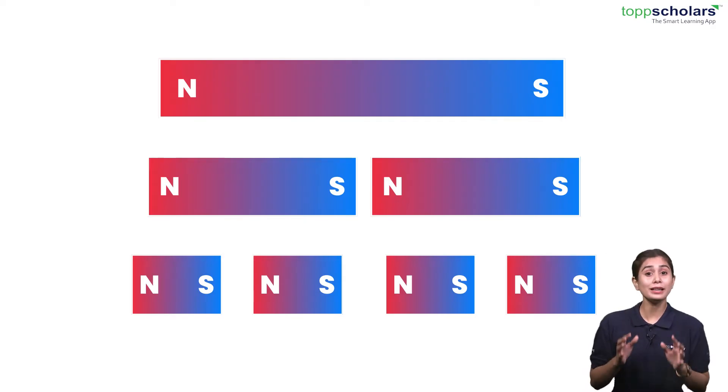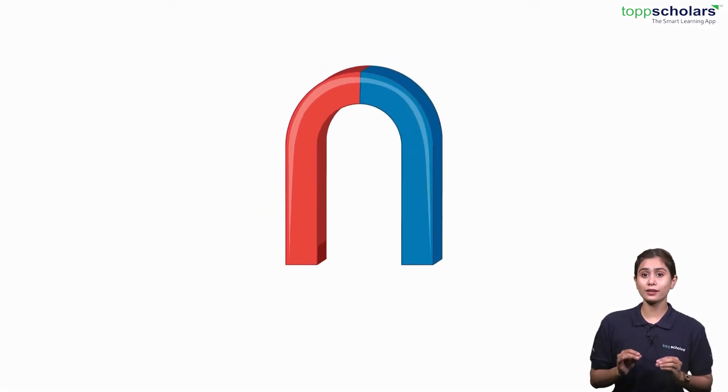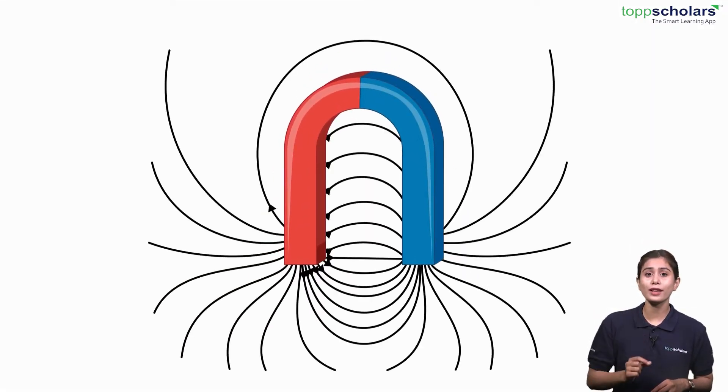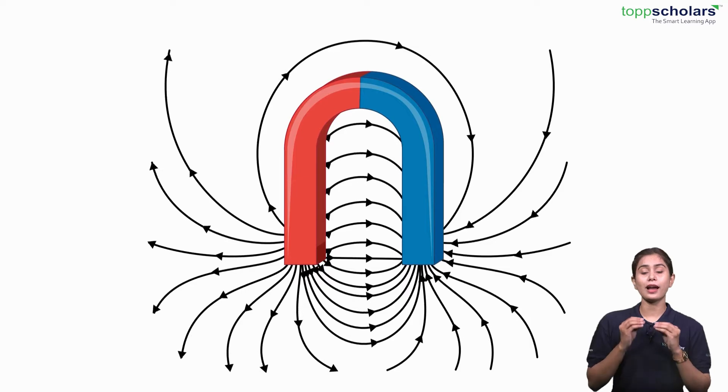No matter how many times you break a magnet, each piece will always have two poles. You can't get a north pole or just a south pole on its own. It isn't possible. This is because magnets must always be balanced. Both poles are necessary.